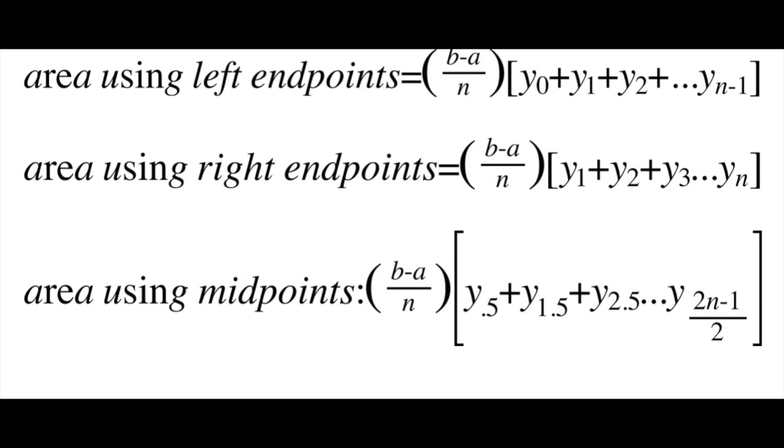There's three different types of Riemann sums, which include left Riemann sum, right Riemann sum, and midpoint Riemann sum. And these are the formulas. Feel free to pause this video to write down these formulas.